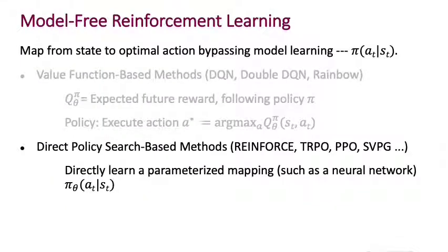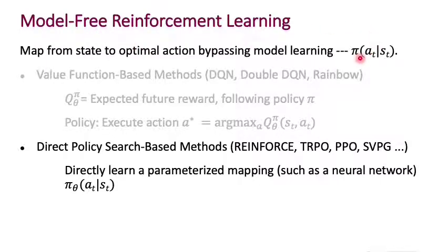Broadly, all of what we've seen in the context of reinforcement learning — DQN and all its variants, and DDPG — fall under the category of approaches called model-free RL approaches. The model that these algorithms are free of is the transition model: they don't explicitly learn a transition model P of S-prime given S and A. Instead, they bypass that step and directly learn the policy. The methods we've seen, including DQN, double DQN, and rainbow, which builds on top of these approaches, are value function-based methods.